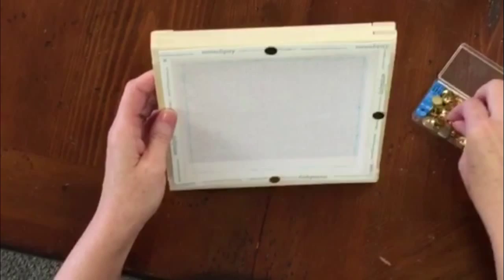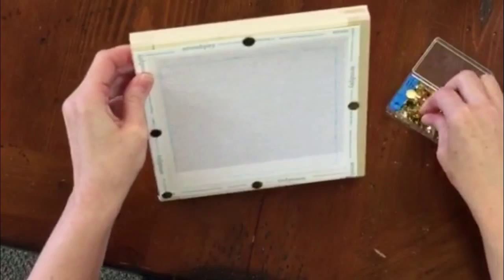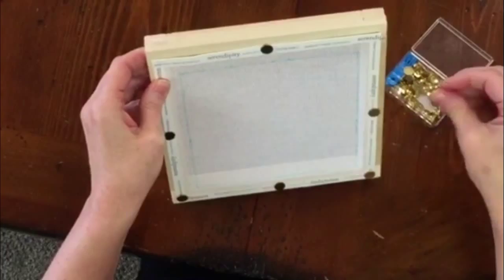Then you want to make sure that you put a tack in each corner. And when you're doing this, you want to make sure that you've got everything pulled pretty tight because the purpose of using stretcher bars or a frame is to keep your canvas taut so that you don't stretch it and it doesn't become misshapen during the process of actually stitching it.